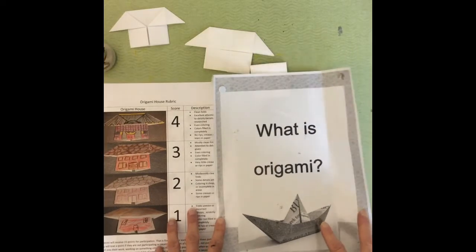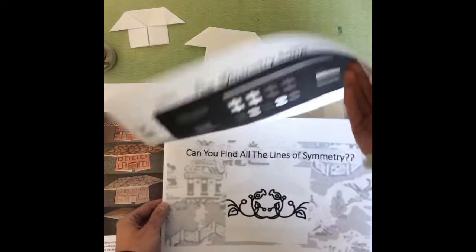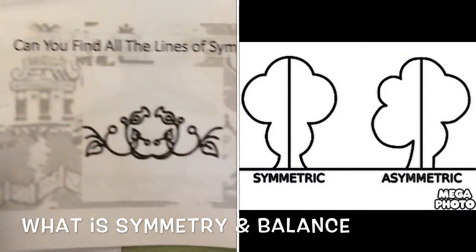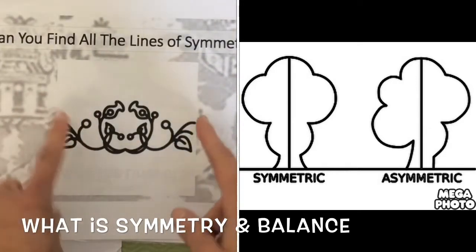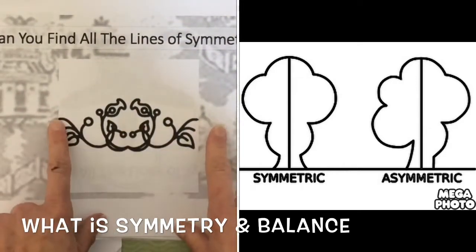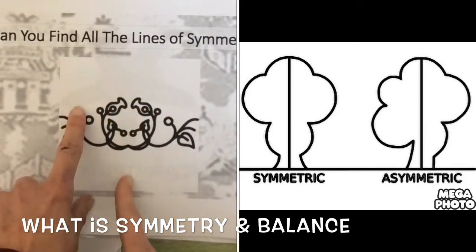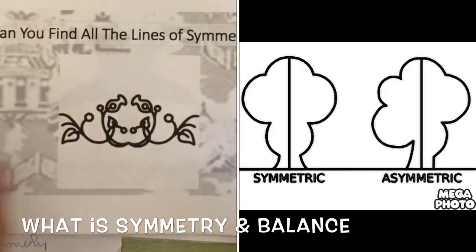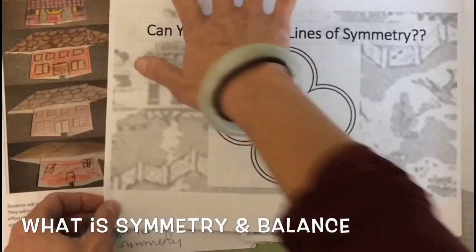Now the principle of art that we want to learn for this project is called symmetry. Symmetry in art means that both sides are exactly the same. If you draw a line down the middle, that's called the line of symmetry, and both sides match. In art, this is called balance.